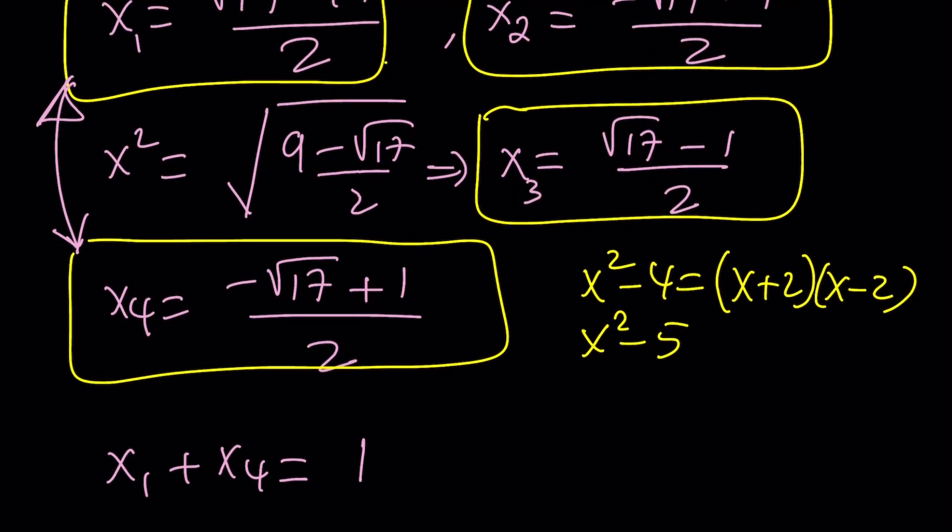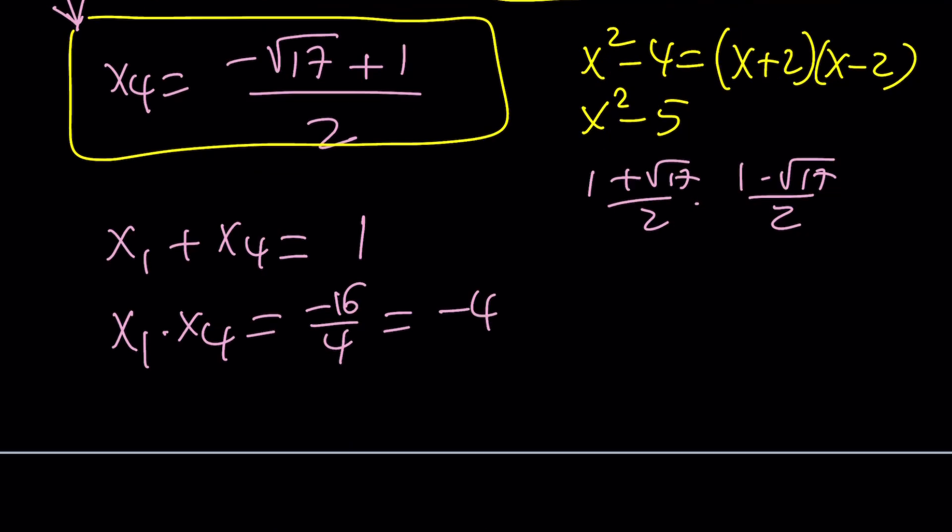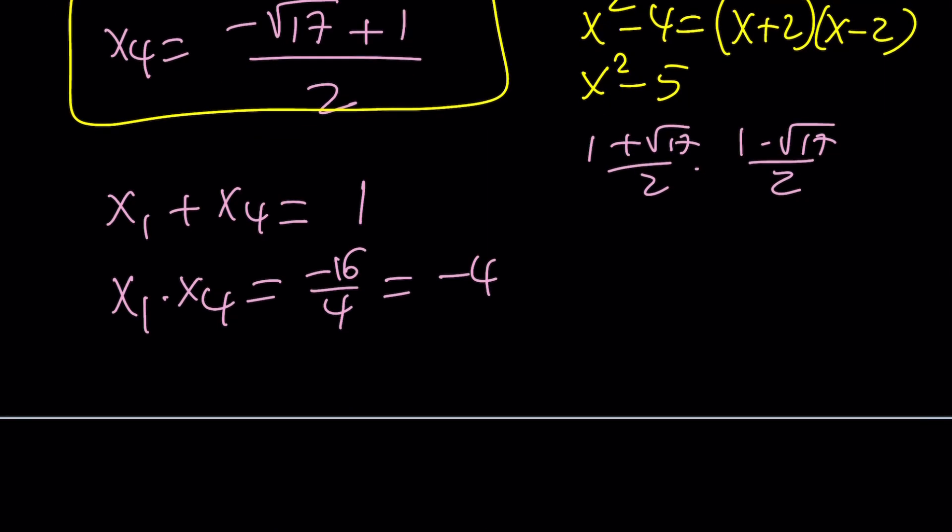So, the product is going to be a difference of two squares, but think of it as 1 plus root 17 over 2, and 1 minus root 17 over 2. So, their product is going to be 1 minus 17, which is negative 16 over 4, and that will be a negative 4. Now, here's what you're thinking.